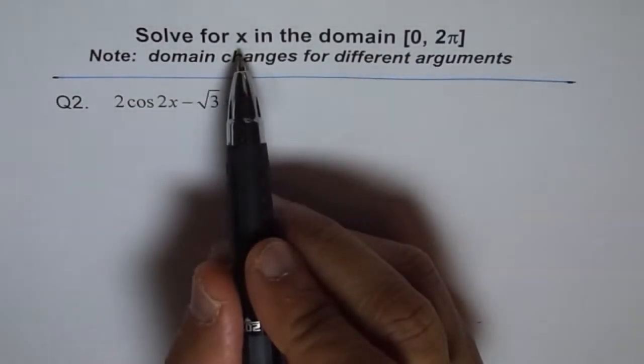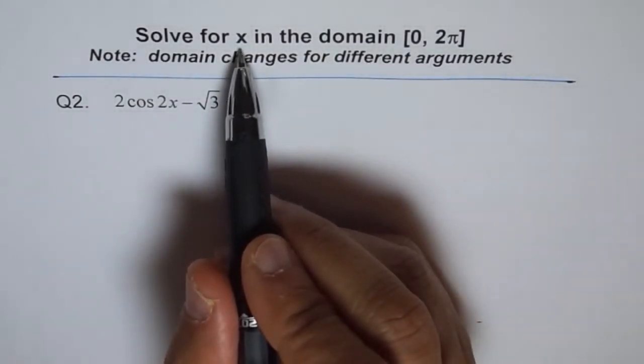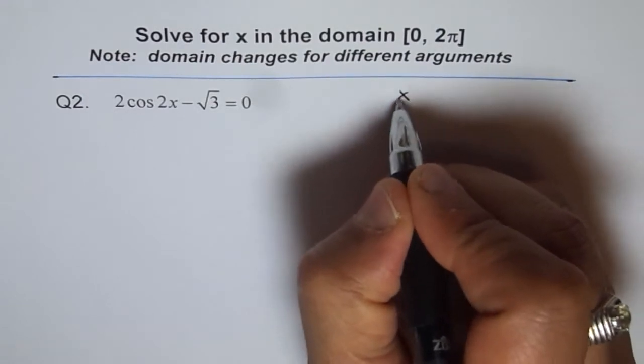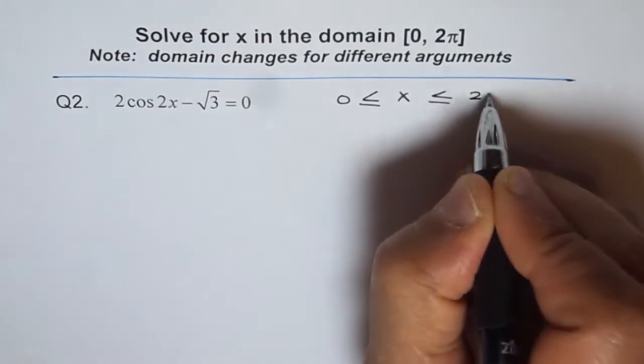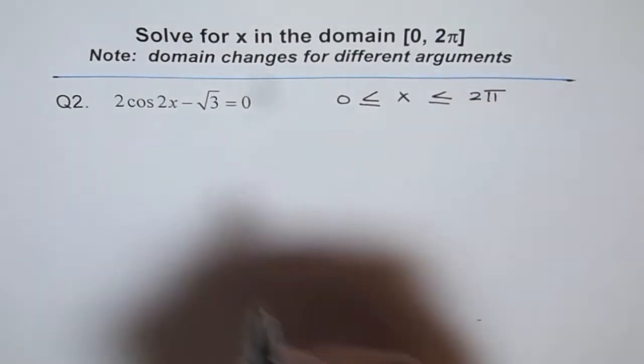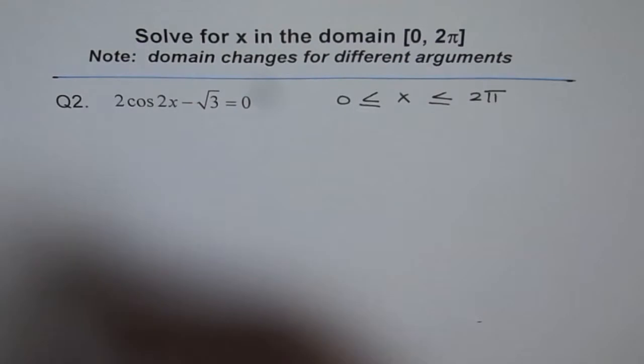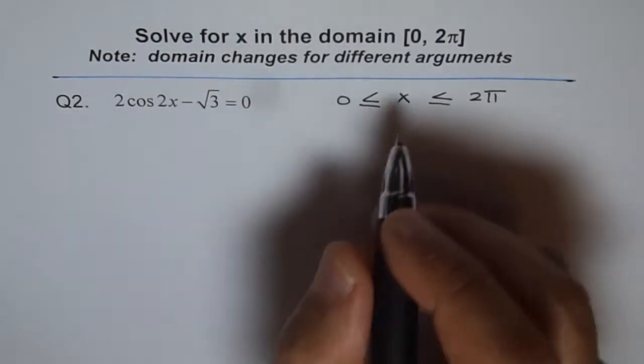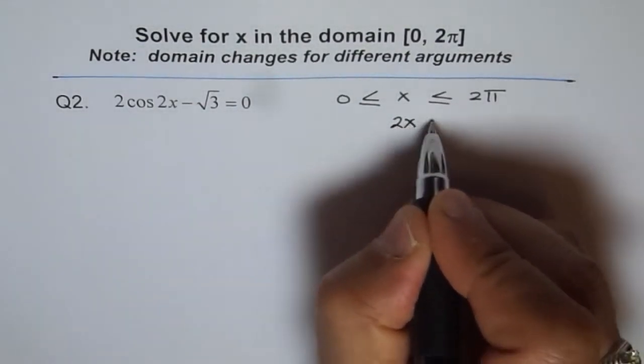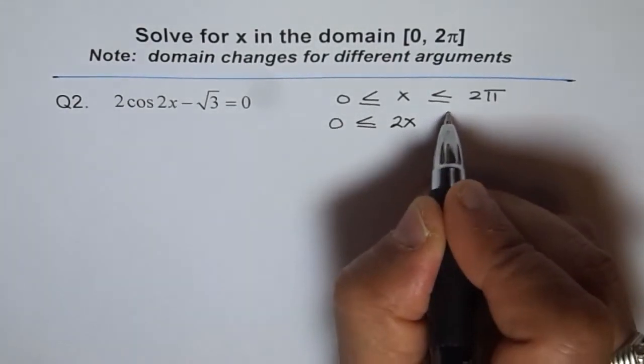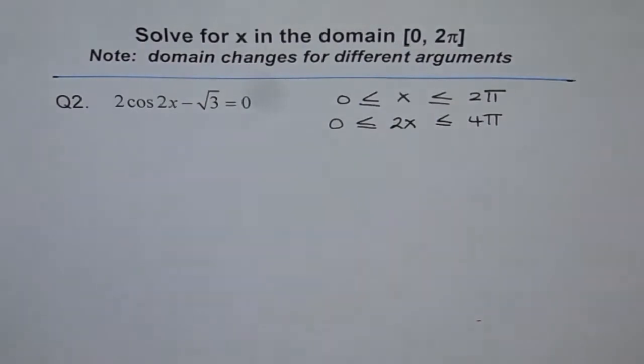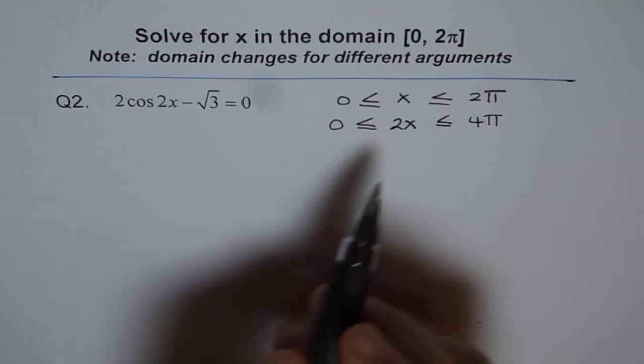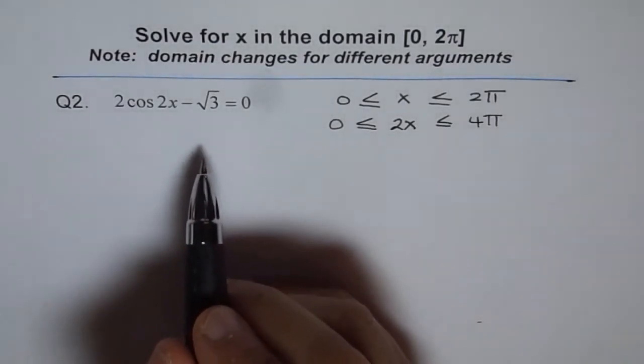The domain here is given for x. So x is greater than or equal to 0 and less than or equal to 2π. In the equation, we have 2x, not x. So what will happen to the domain? This 2x should be greater than or equal to 0 but less than or equal to 4π. That is how the domain changes when the argument changes, and this is what we are trying to understand here.